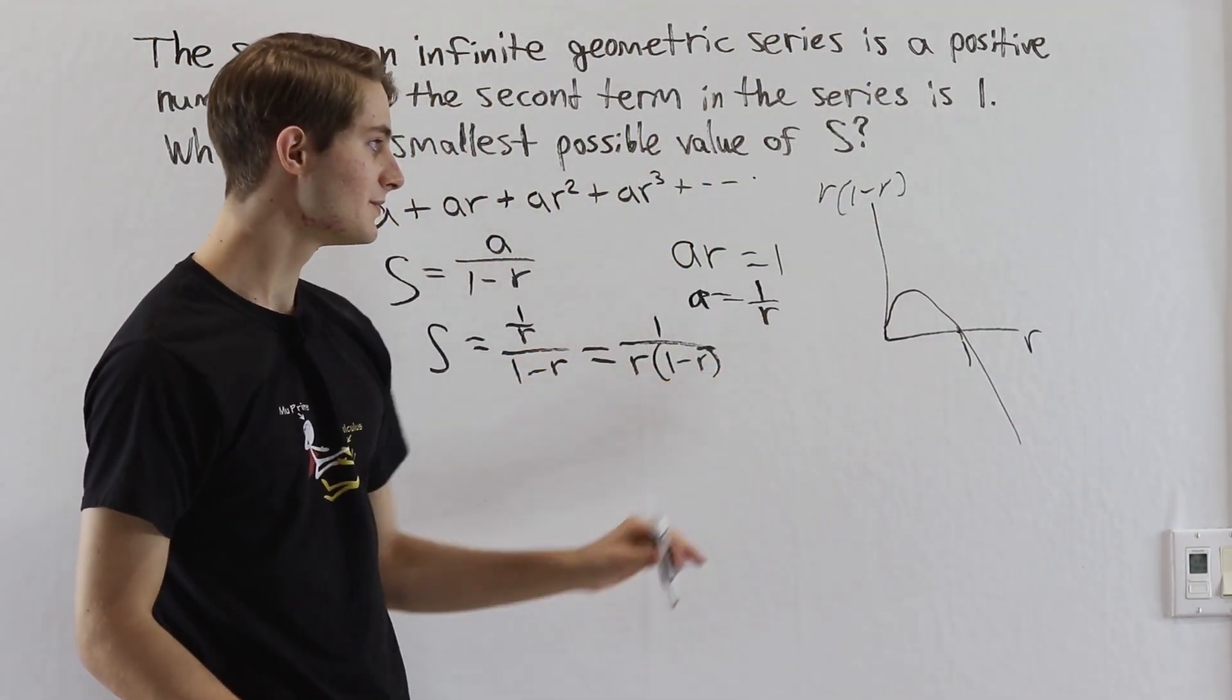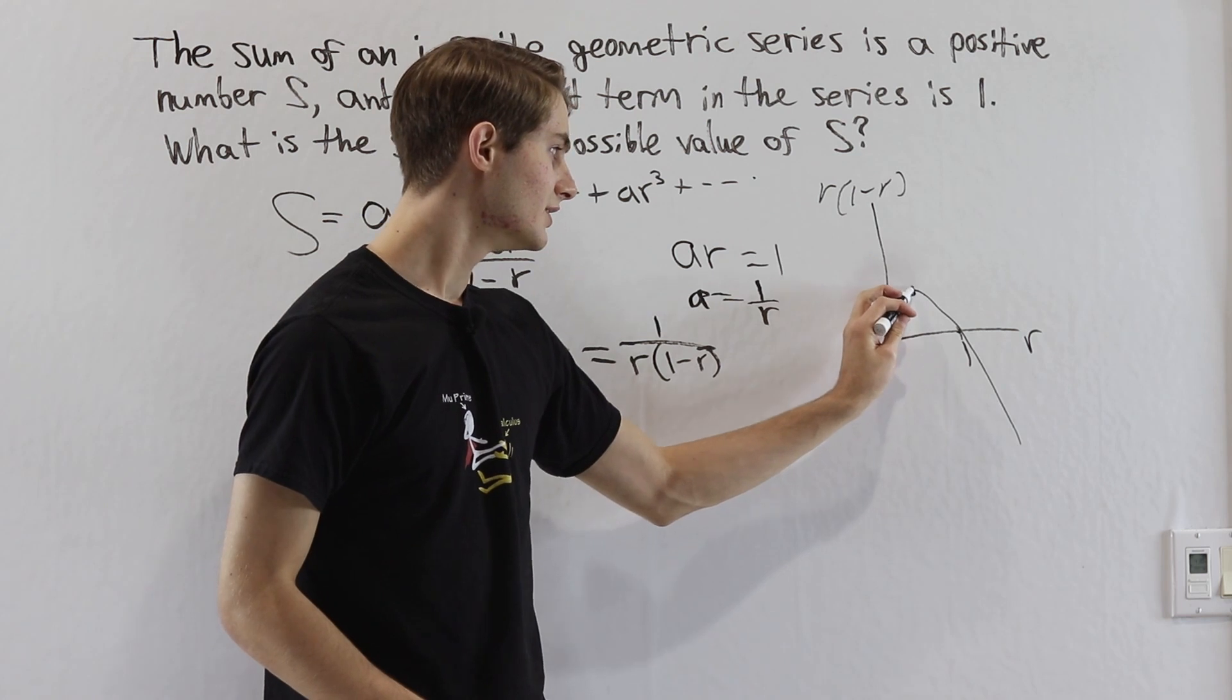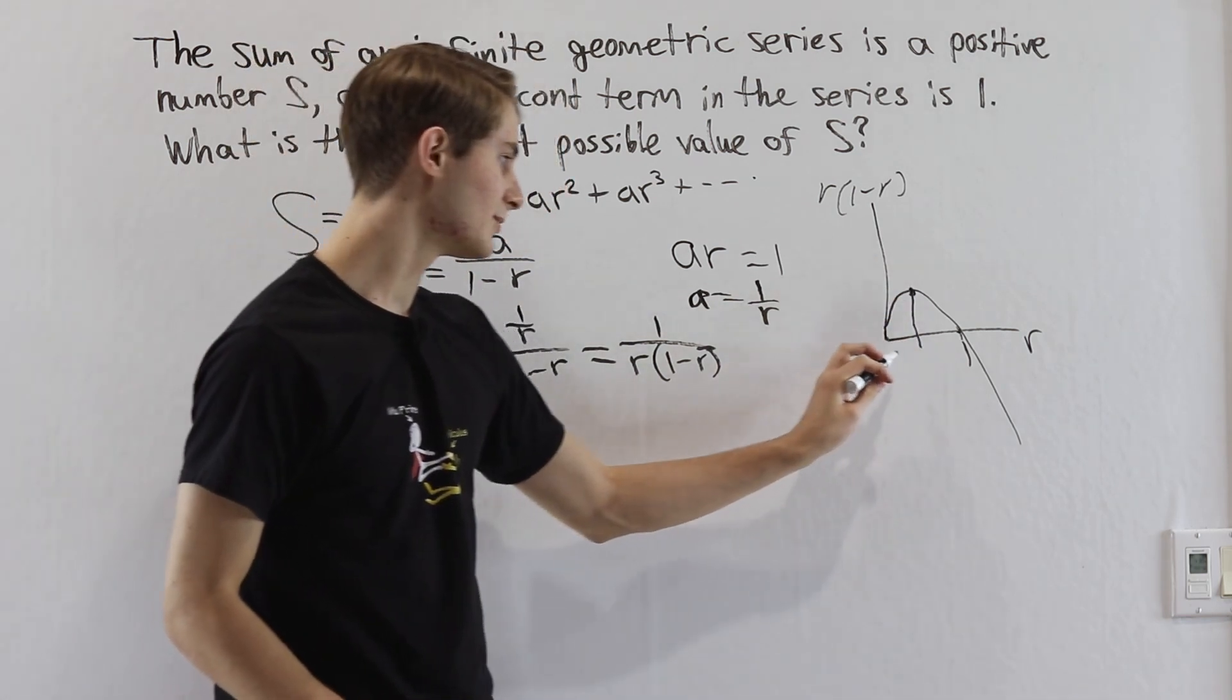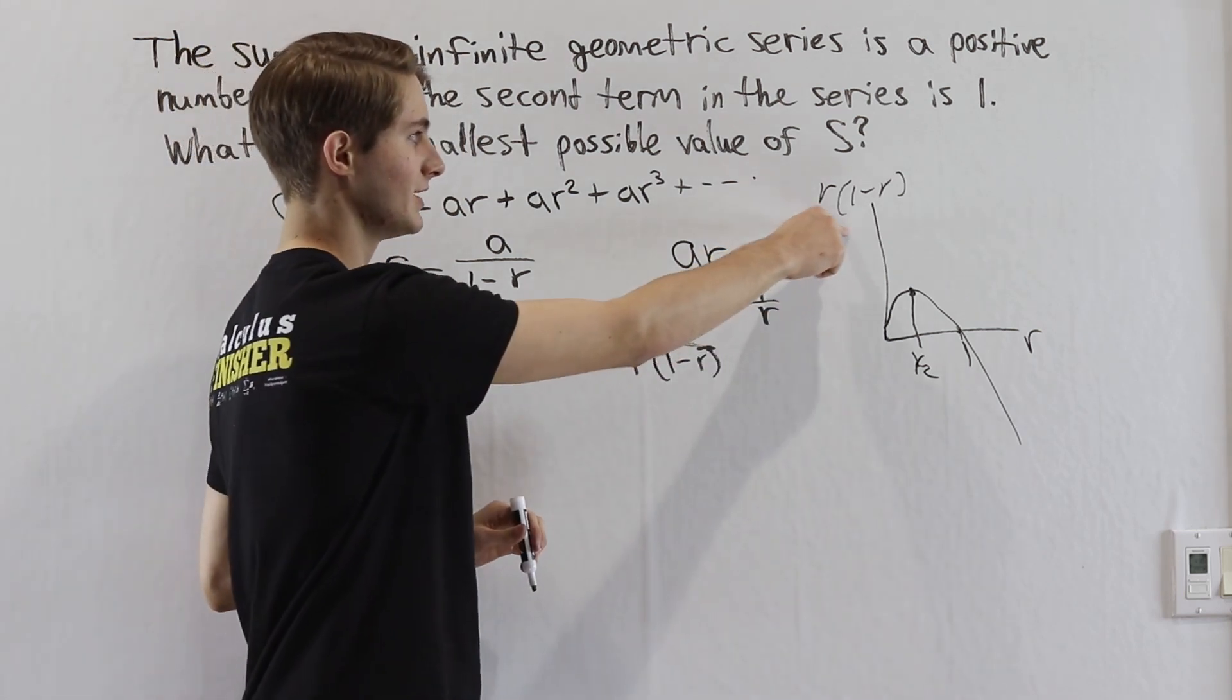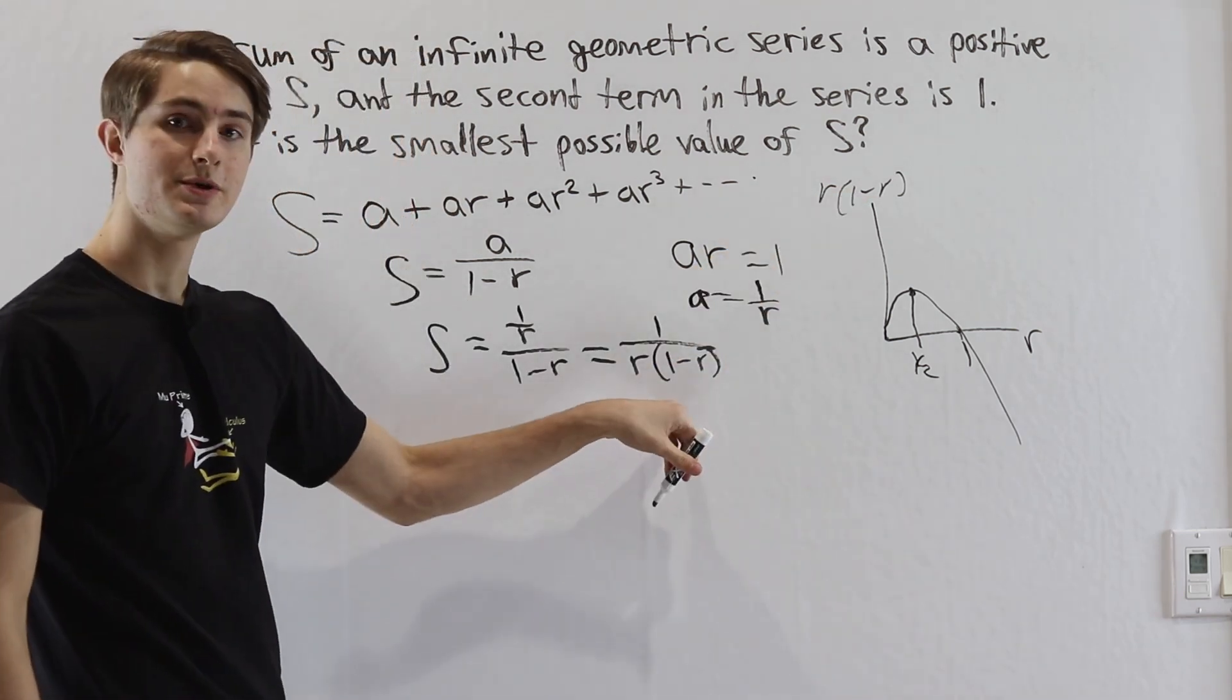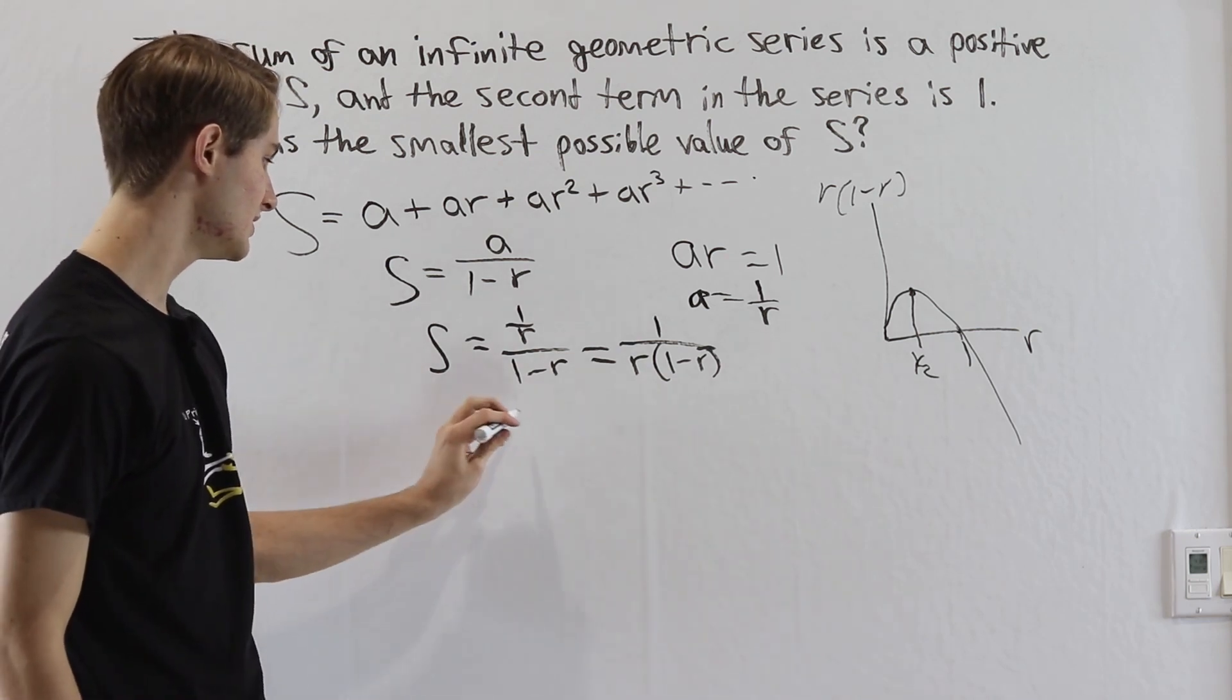When we take a look at this, notice our vertex is going to show up right in the middle of that parabola at 1 half. So the biggest value of r times 1 minus r is going to be when r is 1 half. And we can go over here and plug this in.